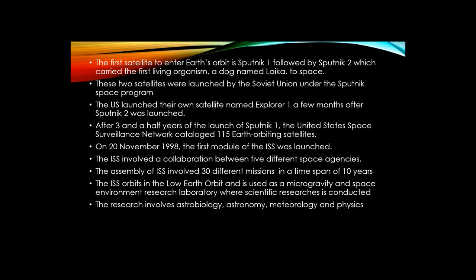The first satellite to enter Earth's orbit is Sputnik 1, followed by Sputnik 2, which carried the first living organism — a dog named Laika — to space. These two satellites were launched by the Soviet Union under the Sputnik space program. The United States launched their own satellite named Explorer 1 a few months after Sputnik 2 was launched.